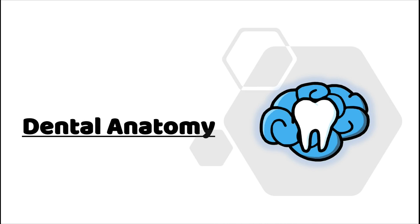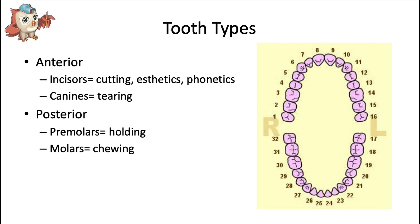Welcome to my dental anatomy video series. This series is going to be all about the structure and function of teeth. Adults usually have 32 permanent teeth, but some people have more and some have less. The complete set of adult teeth is called the permanent dentition, distributed between an upper arch and a lower arch.